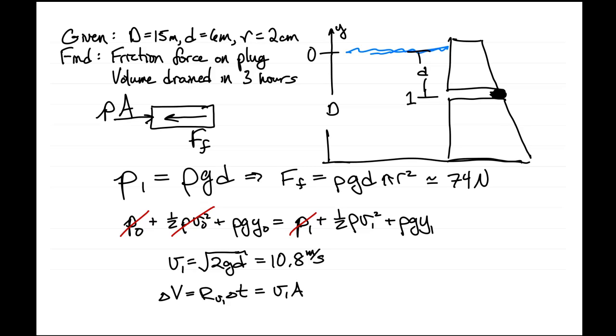And then delta t, we have 10.8 meters per second. The cross sectional area of the pipe is pi times 0.02 meters squared. Delta t is 3 hours. We need to change that to seconds. So we get 60 minutes per hour and 60 seconds per minute.